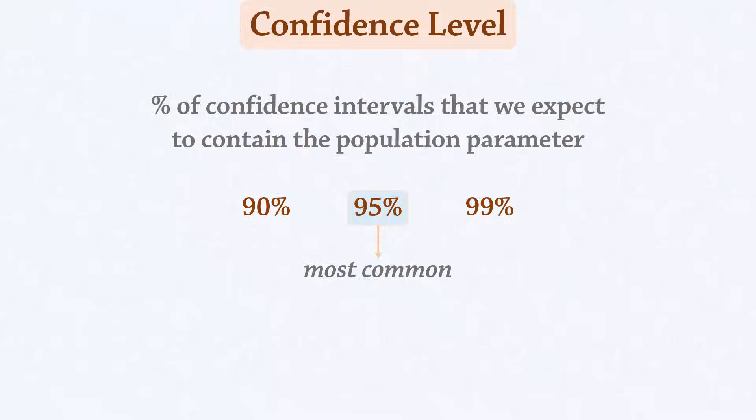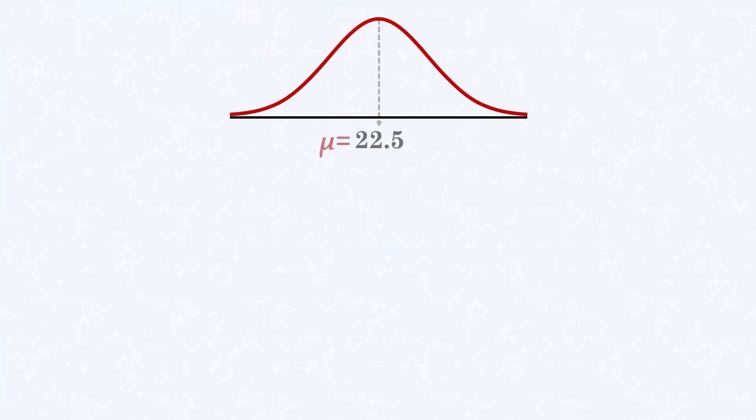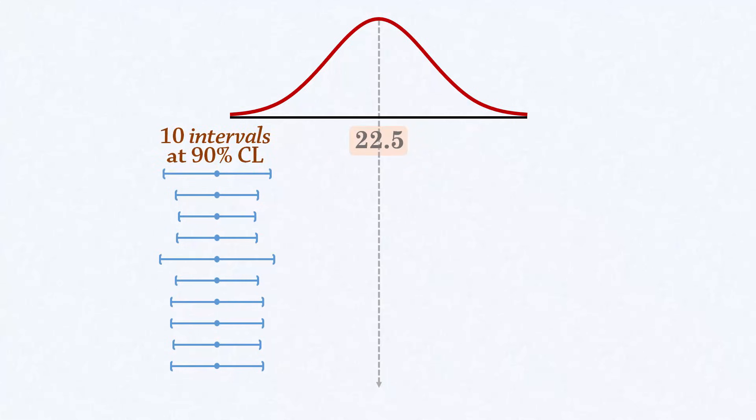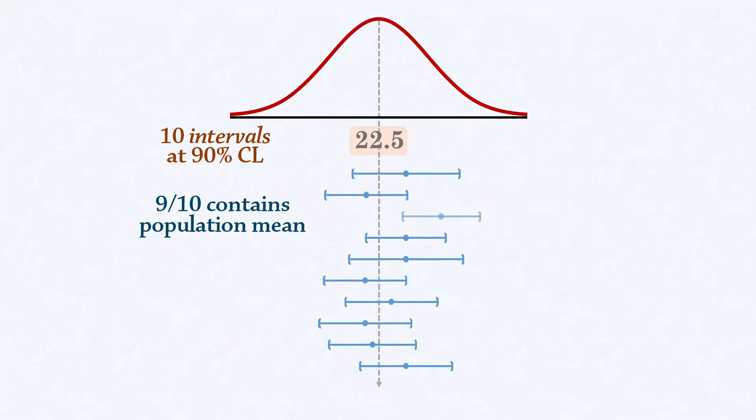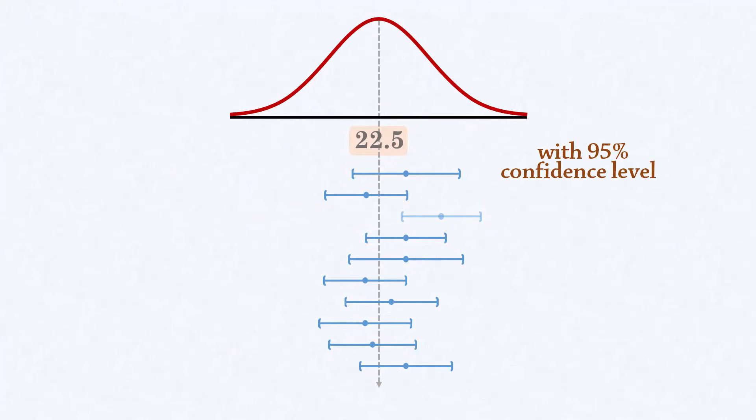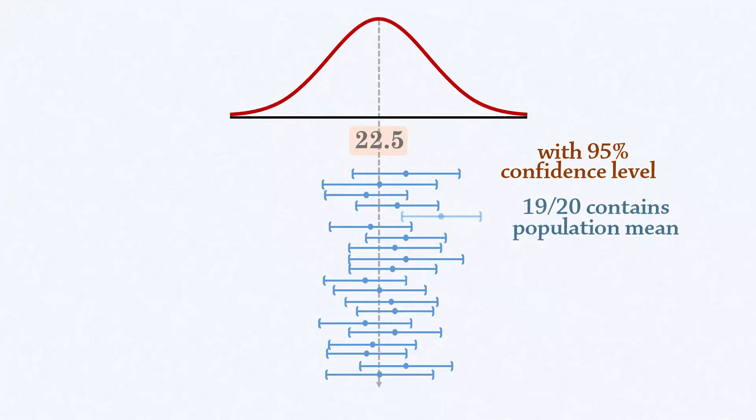To illustrate, suppose the true population mean age at the college is 22.5. If we select 10 samples of the same size and construct 10 confidence intervals at 90% confidence level, we will expect 9 of the 10 to contain the population mean. And with 95%, we will expect 19 out of 20 intervals to contain the population mean.